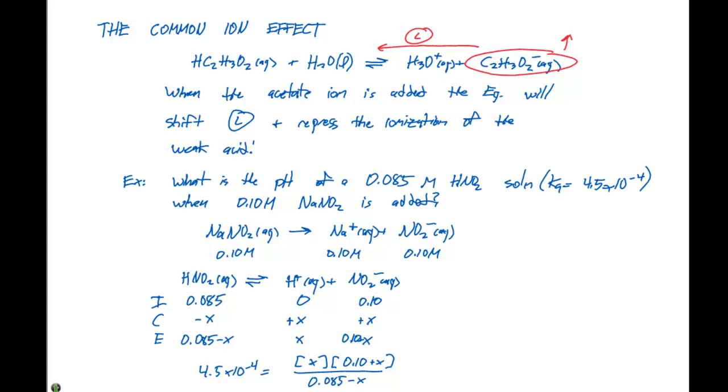If we rearrange this expression and use the quadratic equation, we solve for X, which equals 0.00379. This equals the concentration of H+. Taking the negative log of that to solve for pH, we get 3.42.